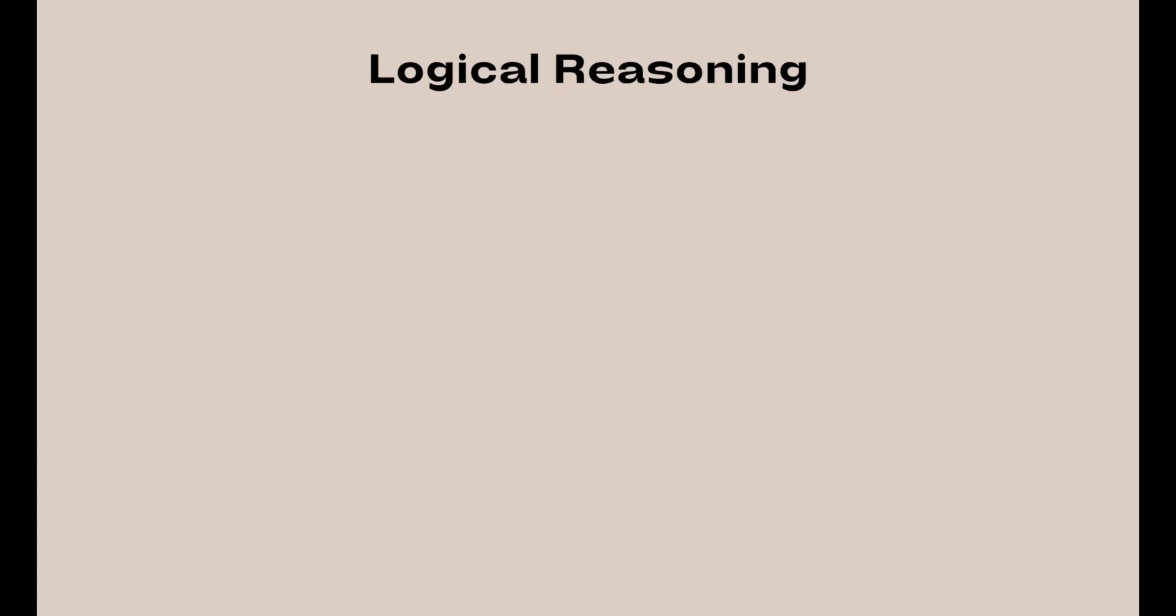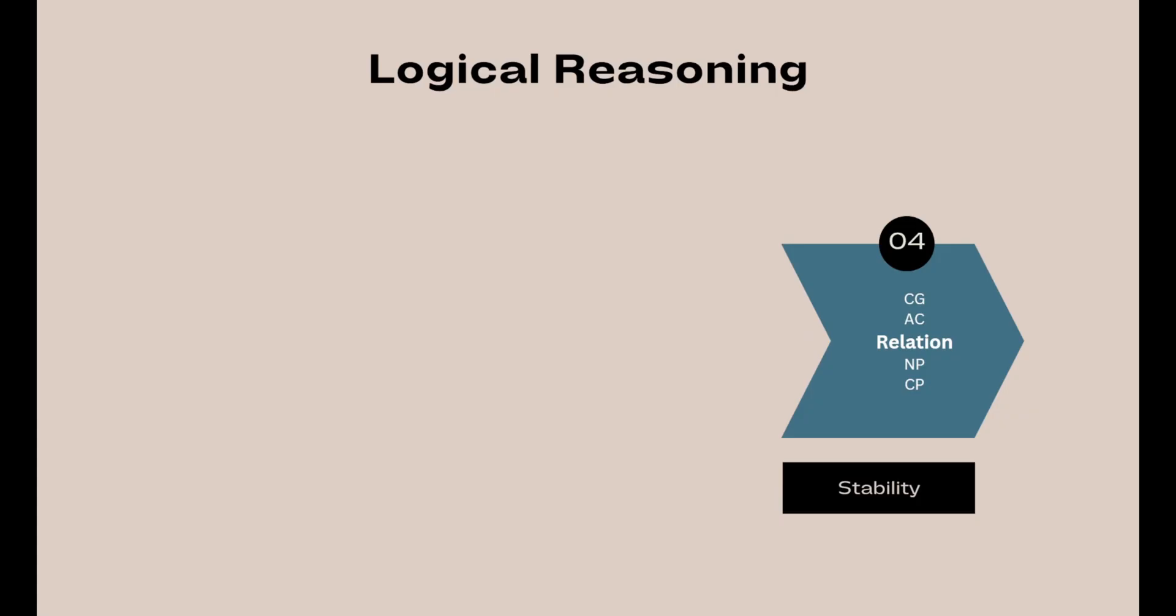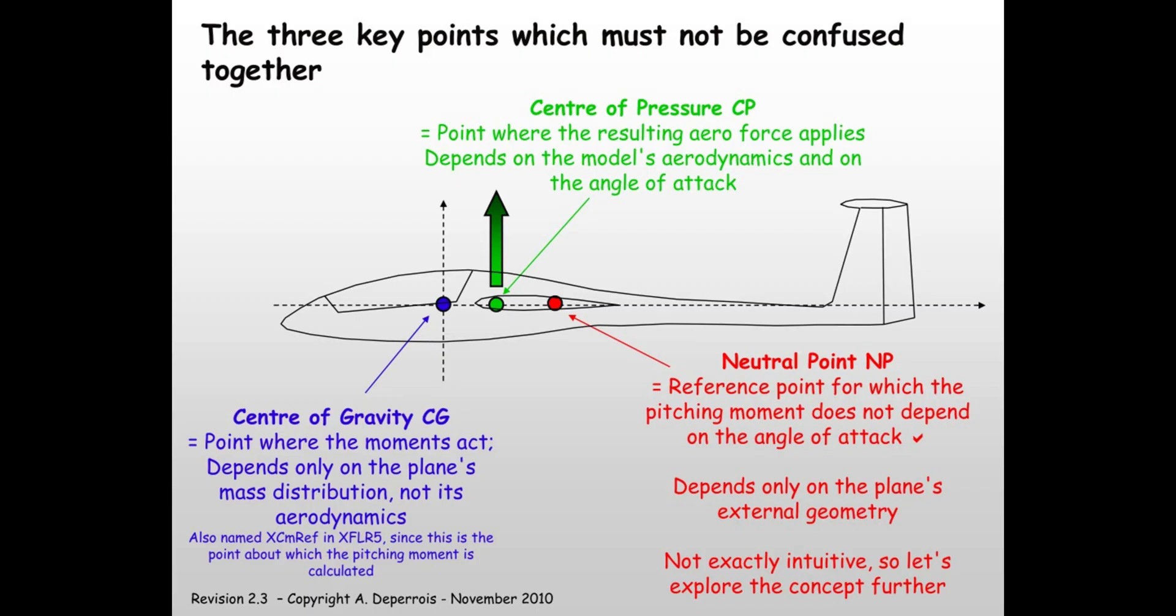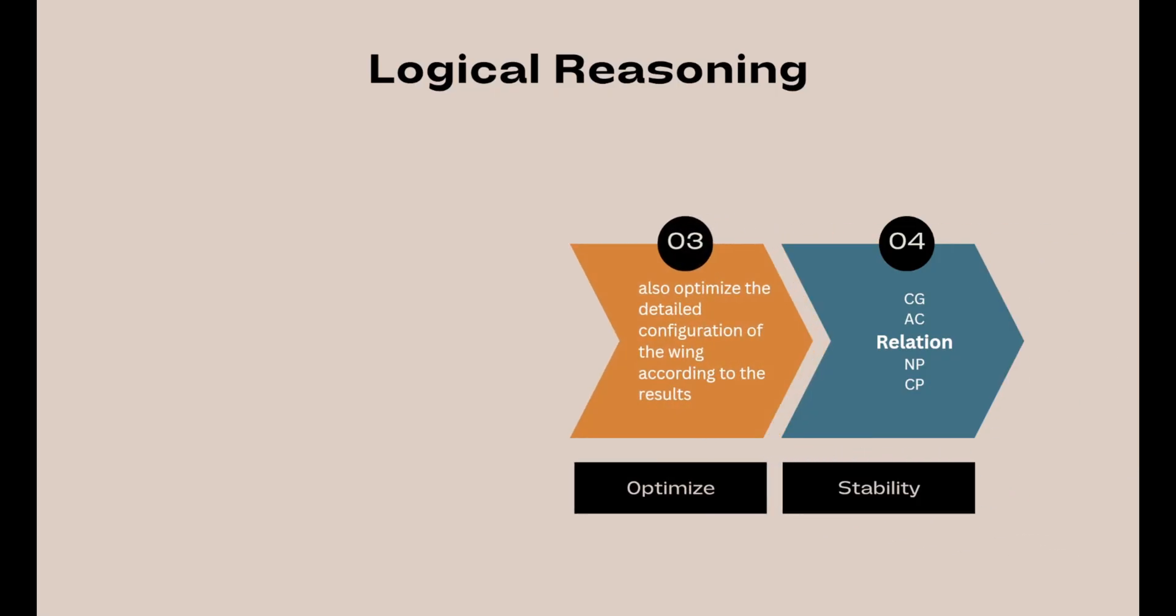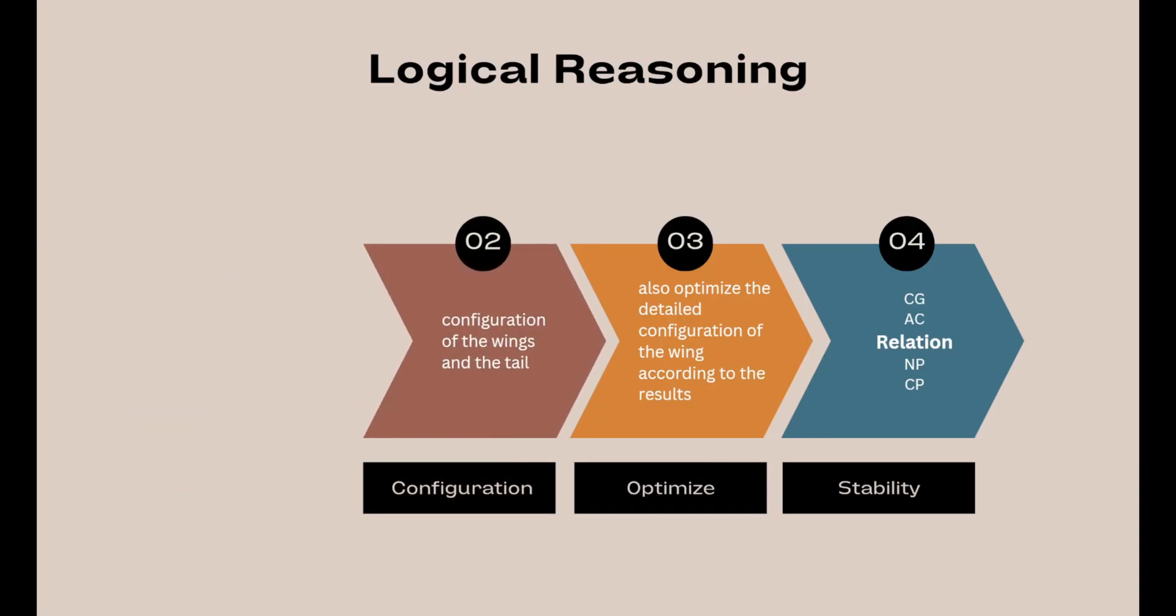Here's my approach to stability testing. First, I take into account that the most important factor related to stability is the center of gravity, CG, as well as the relationship between neutral point, NP, and center of pressure, CP, under the given wing and tail configurations. Once the center of gravity is estimated and set, the rest is mainly related to the wing and tail configurations. So, I'll start making adjustments from that part.